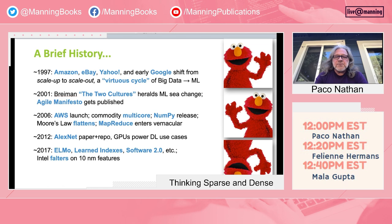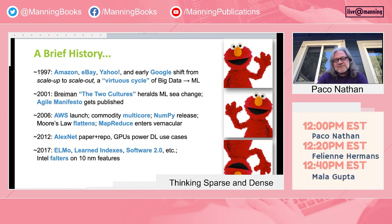Then in 2001, Leo Breiman published the infamous Two Cultures paper, which heralded machine learning in production. At the same time, the Agile Manifesto was getting published — and frankly, those two groups couldn't be more disjoint; they were like aliens to each other. Then in 2006, I was a guinea pig for the launch of something new called AWS. At the same time, Intel was producing the first commodity multi-core chips. NumPy was released, people started talking about MapReduce, and so on.